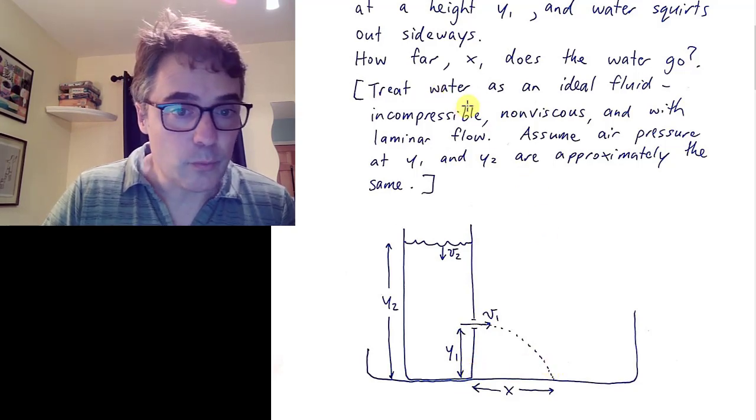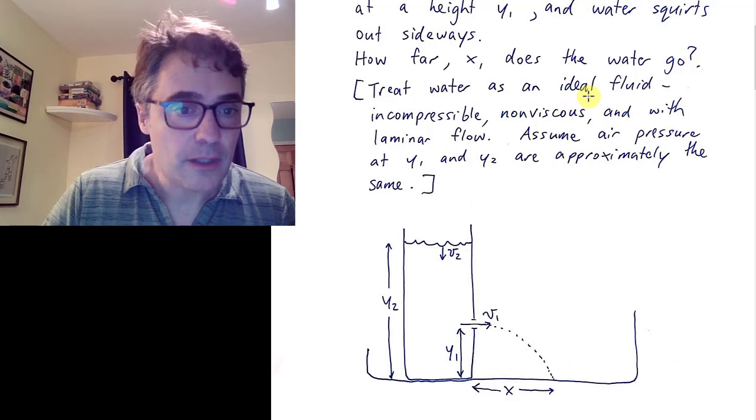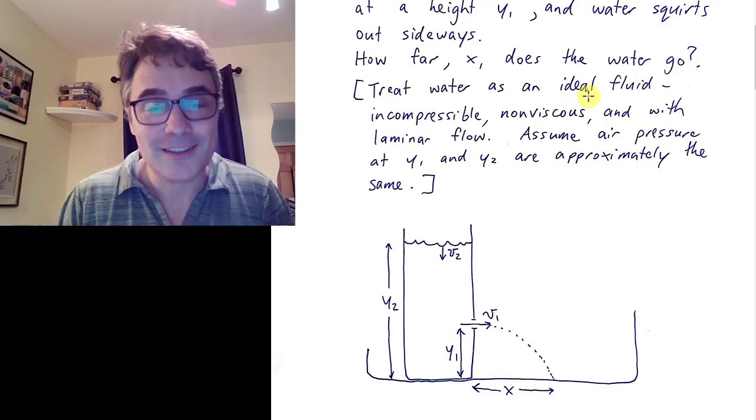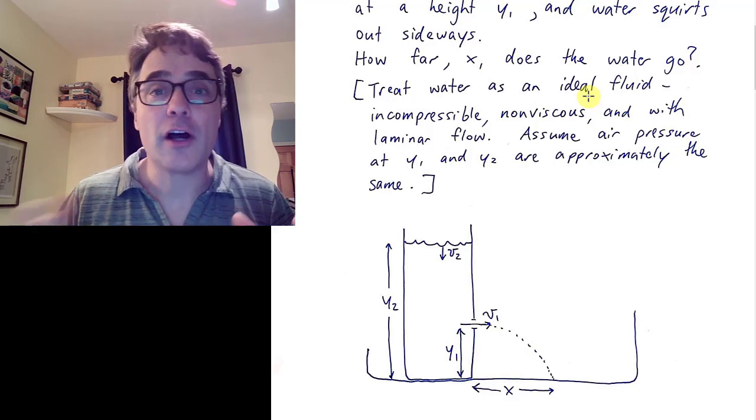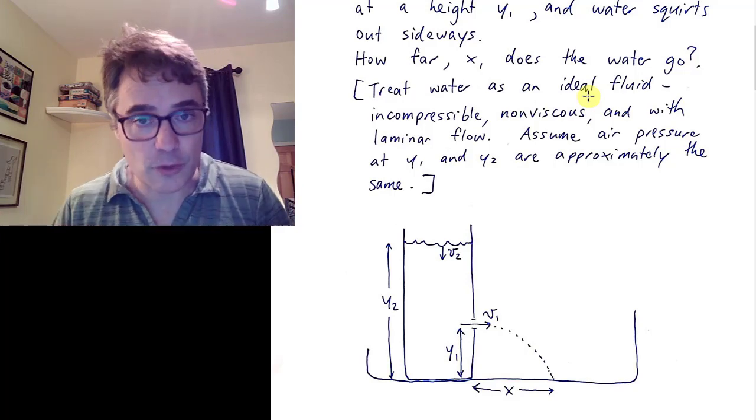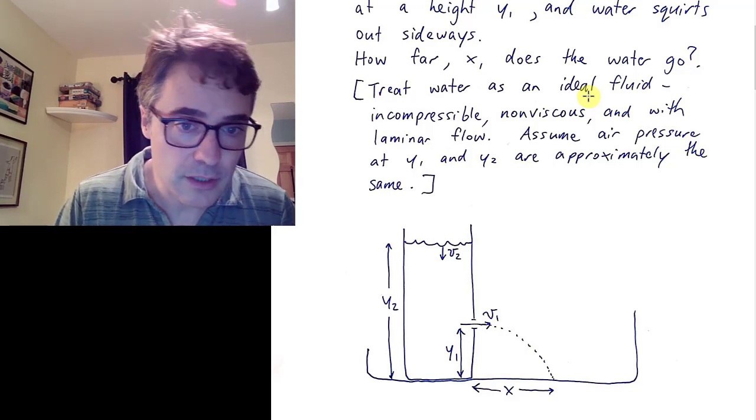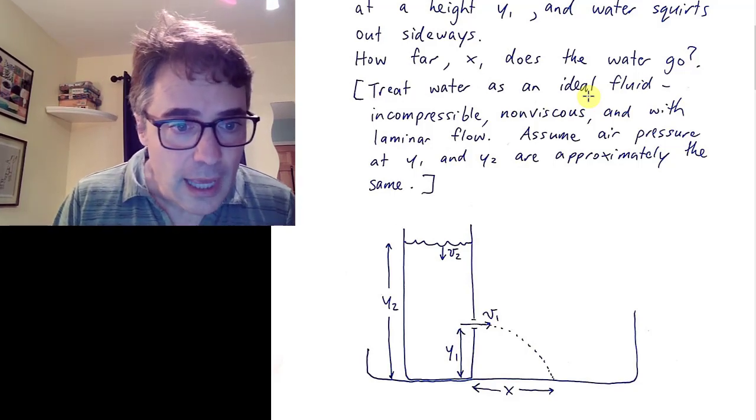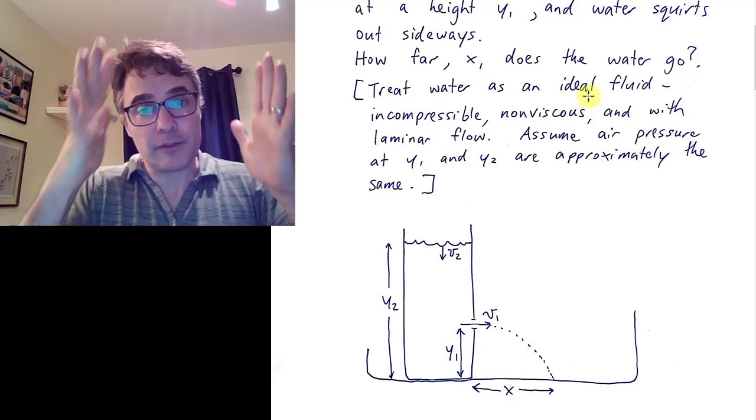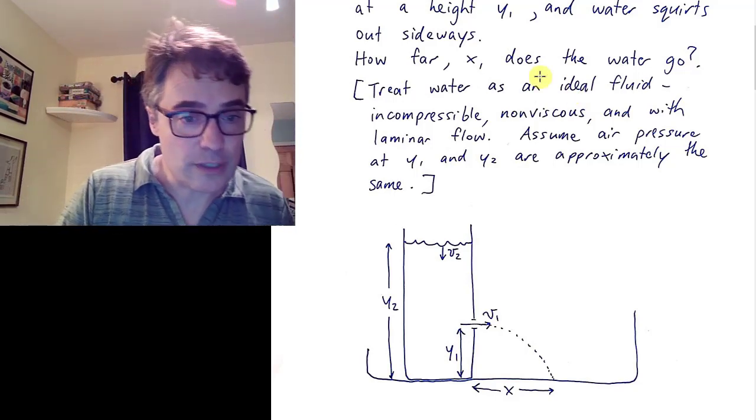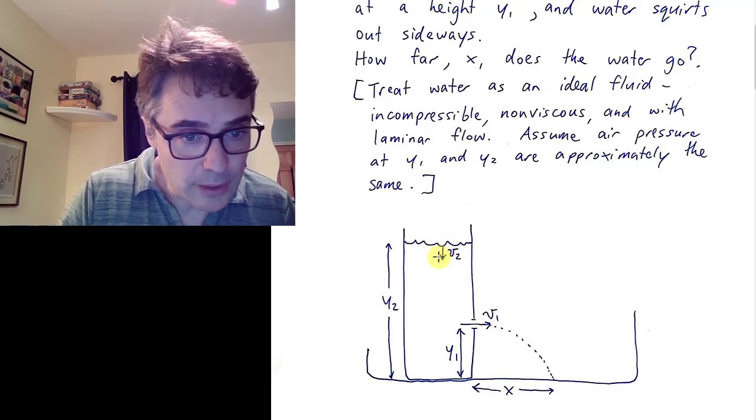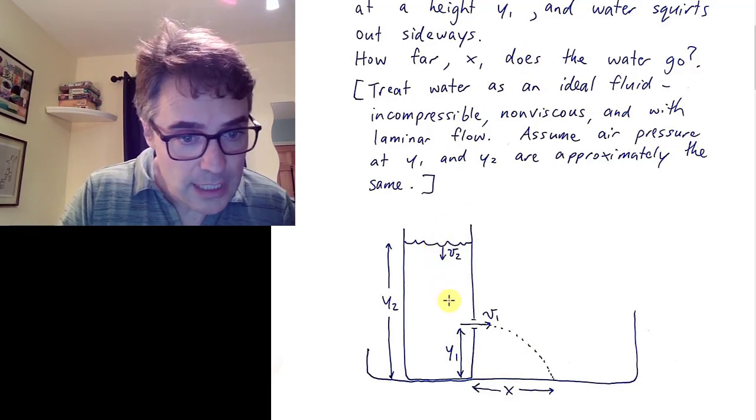You can treat water as an ideal fluid: incompressible, meaning it doesn't change its volume with pressure; non-viscous, meaning that it doesn't have dissipative frictional forces as it flows past the walls; and with laminar flow. Laminar flow means that as it flows, you can create these streamlines. What we're going to imagine is a streamline going from some point 2 here at the surface down to some point 1 at the hole.